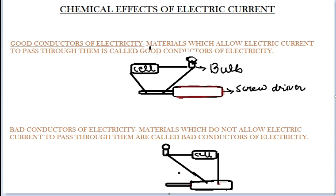Good conductors of electricity: materials which allow electric current to pass through them are called good conductors of electricity. Bad conductors of electricity: materials which do not allow electric current to pass through them are called bad conductors of electricity.